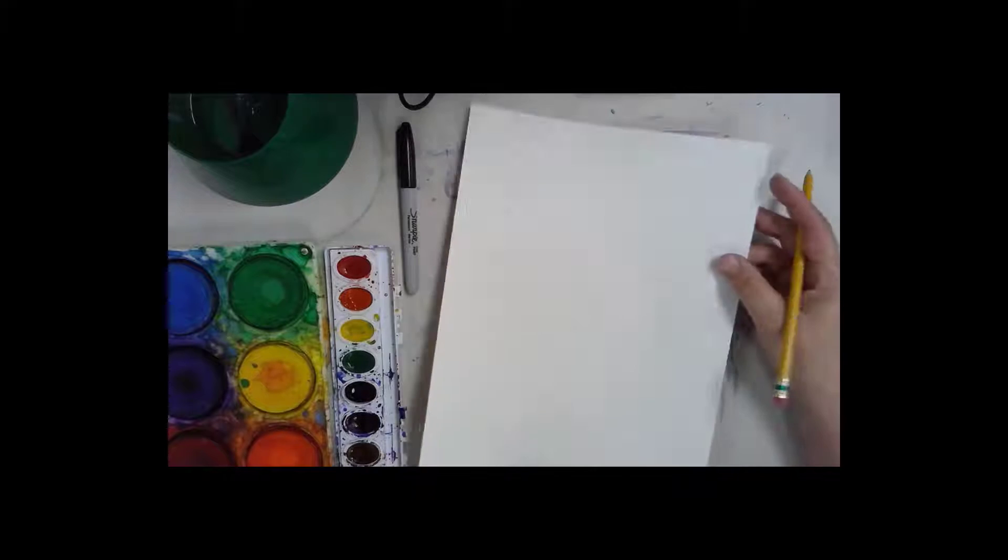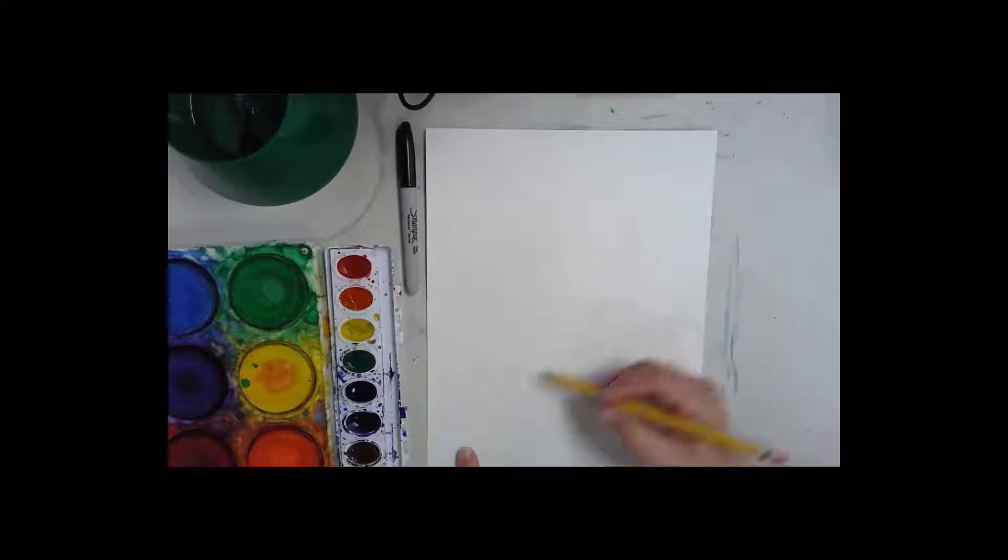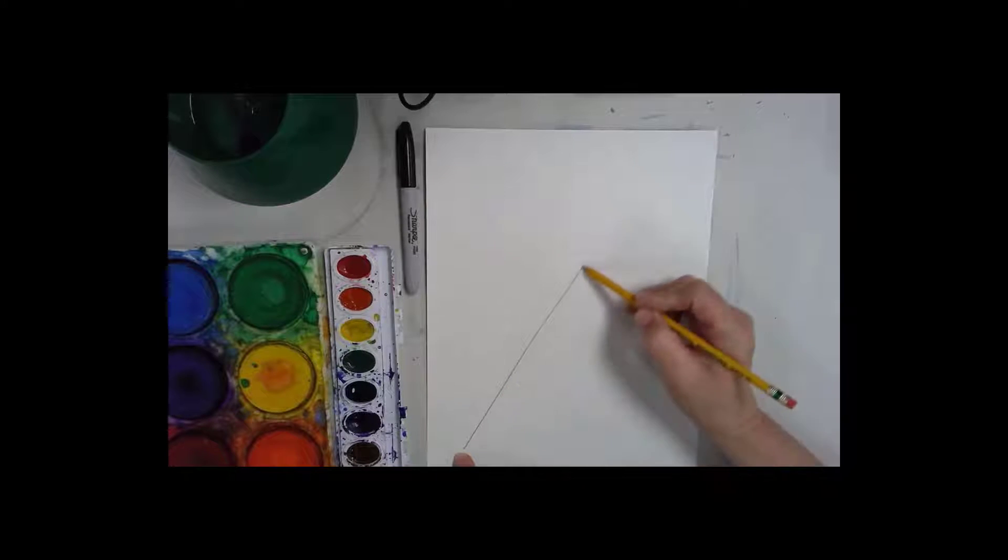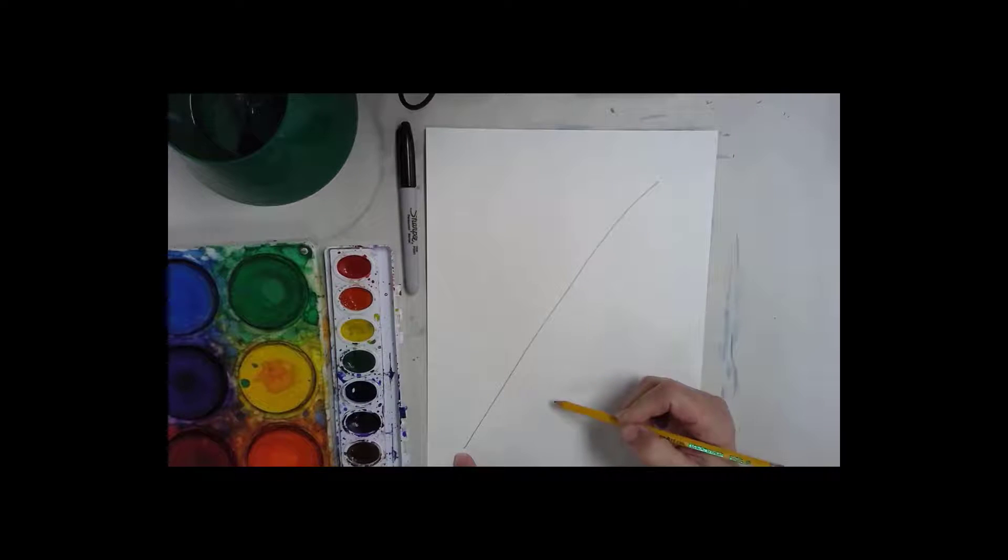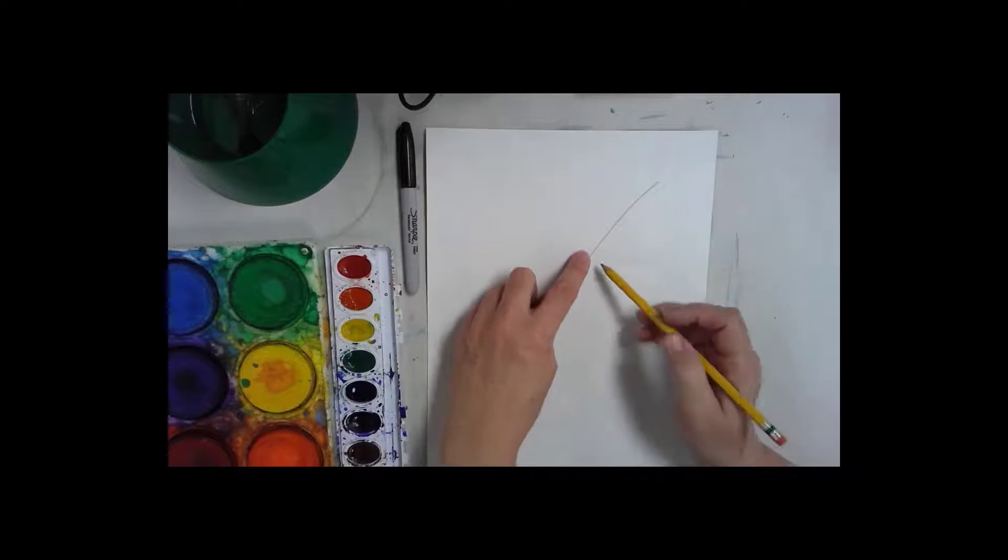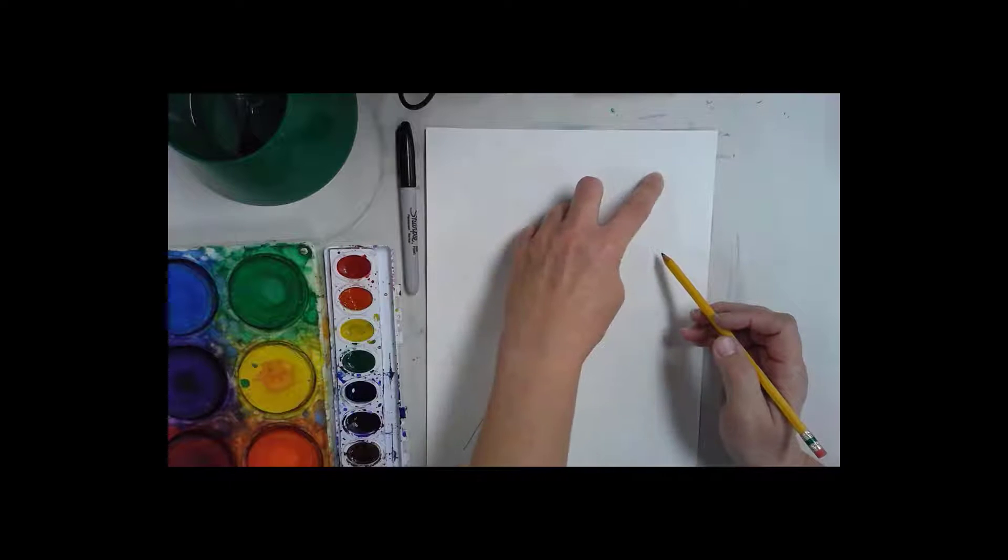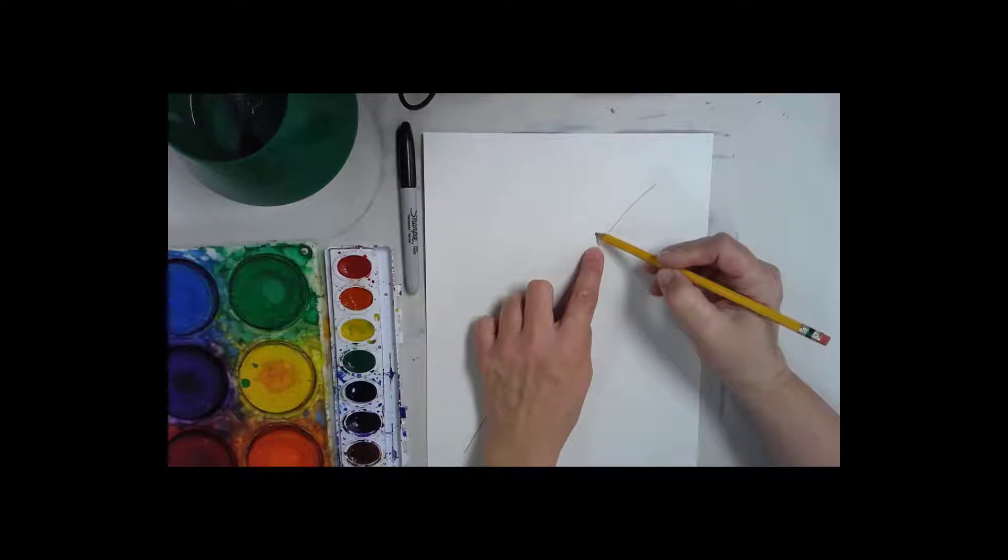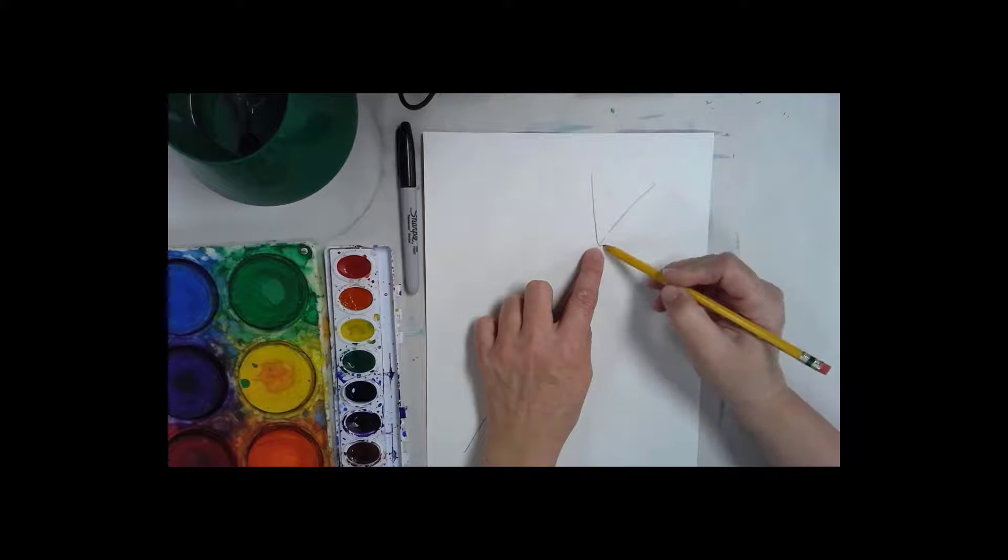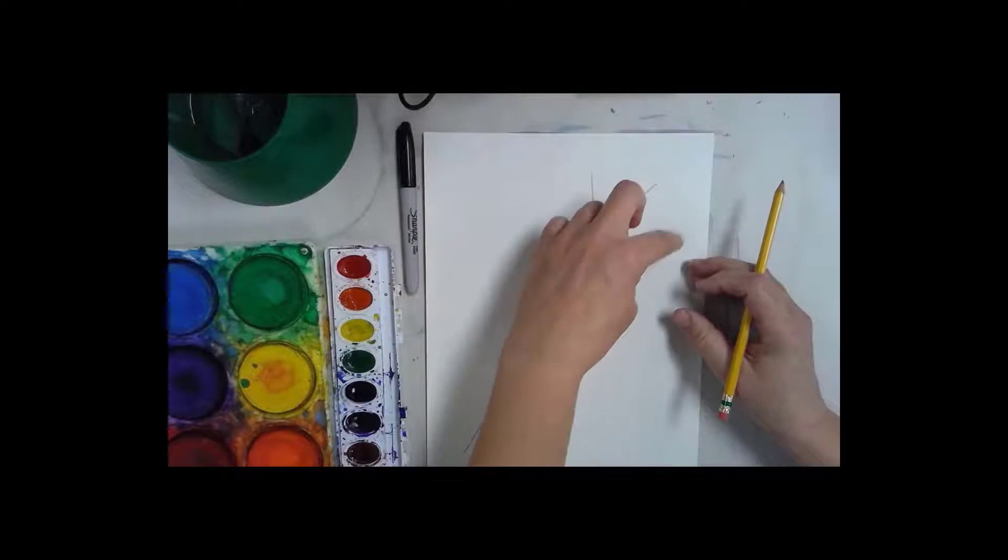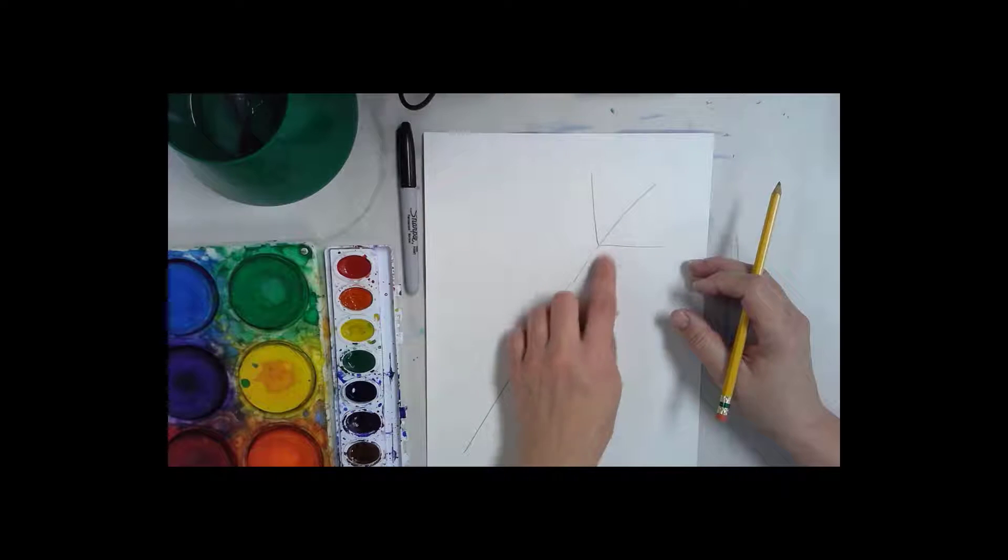Flip it over and we're going to start by making a diagonal line that is not touching this corner but close and not touching this corner but close. Then we're going to make two diagonal lines coming out from the top of this. I'm going to go diagonally this way and this way and they're about the same length as the section that I connected it to.